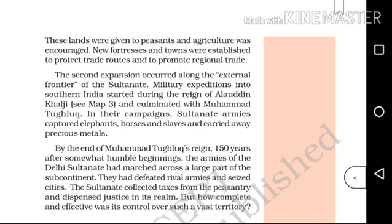New fortresses and towns were established to protect trade routes and to promote regional trade. The second expansion occurred along the external frontier of the Sultanate.